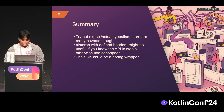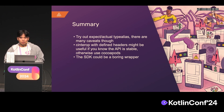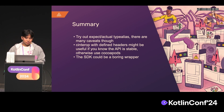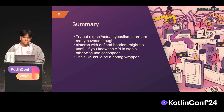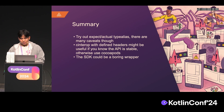To summarize: try out expect/actuals with type alias — it's actually pretty fun. There are many caveats that may warrant another blog post or talk; a lot of things require workarounds. Using CInterop with defined headers might be useful if you know the API is stable; otherwise, CocoaPods is the way to go.